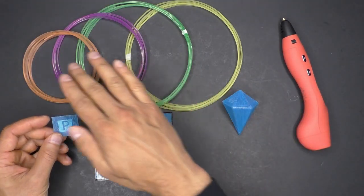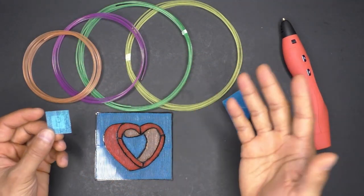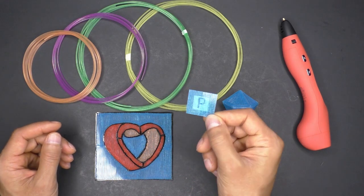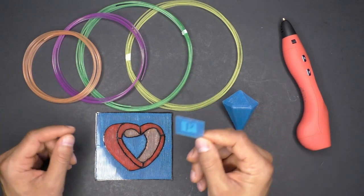In this 3D pen tutorial, we're going to take a look at a special type of filament, which is called a lot of different things. I'm going to refer to it as see-through filament, but it can also be labeled as translucent or even transparent.